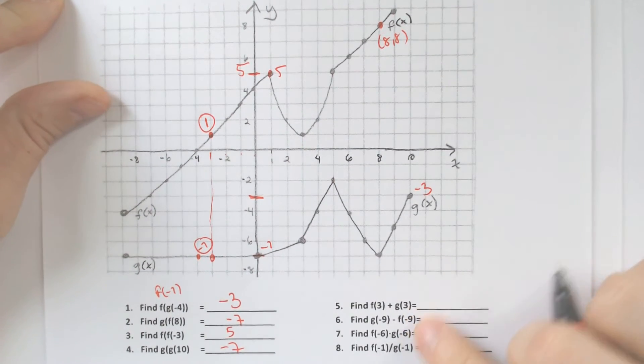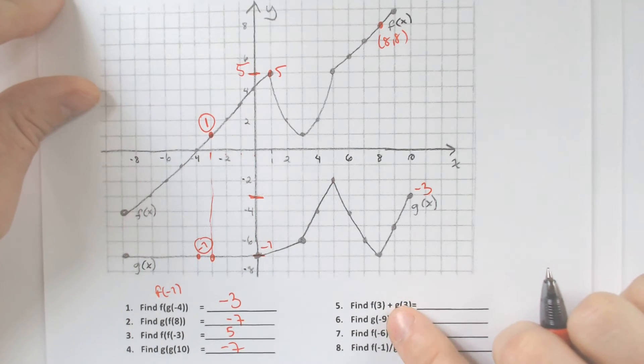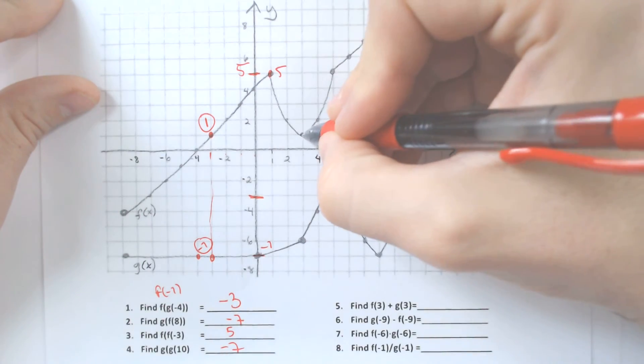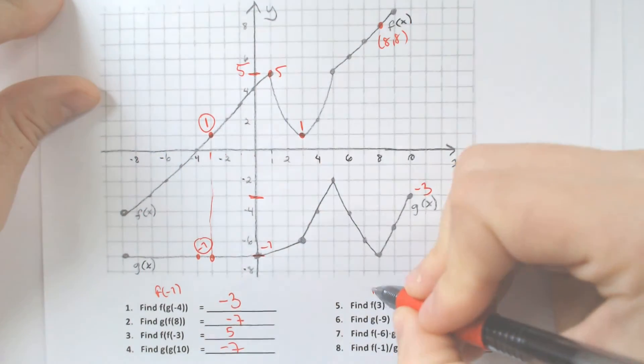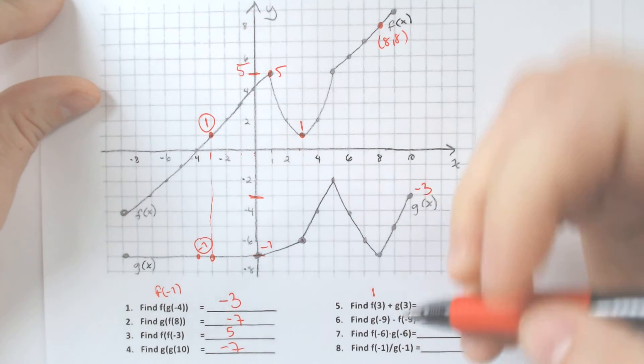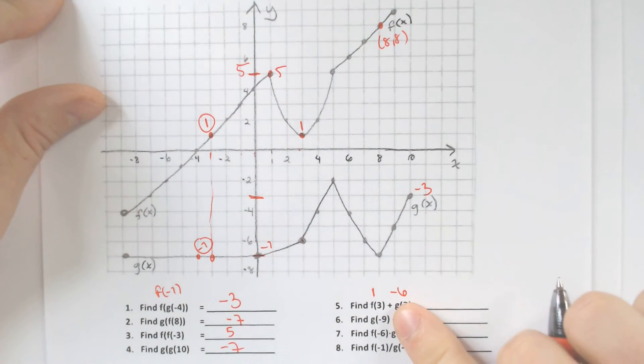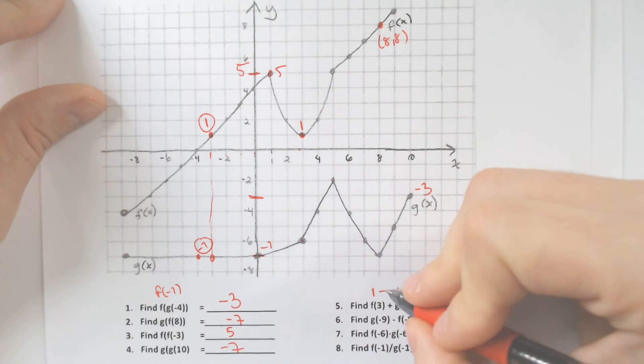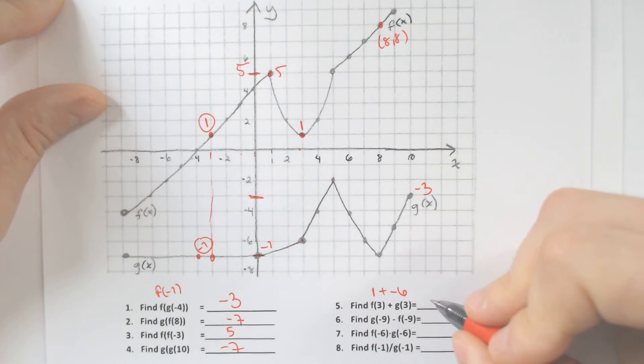These next ones are a little bit different, where we have to do f of 3 plus g of 3, so we need to figure out what is f of 3. f of 3 is 1. g of 3 is negative 6. There's a plus sign in between them, so we need to add 1 and negative 6 together to get negative 5.